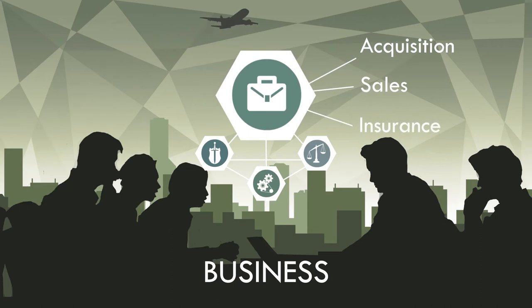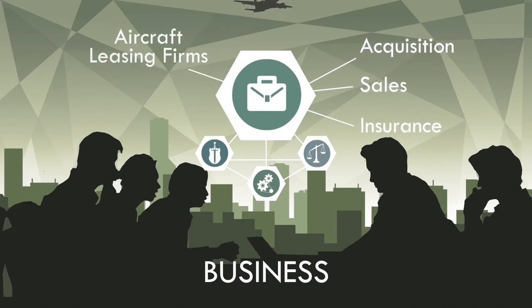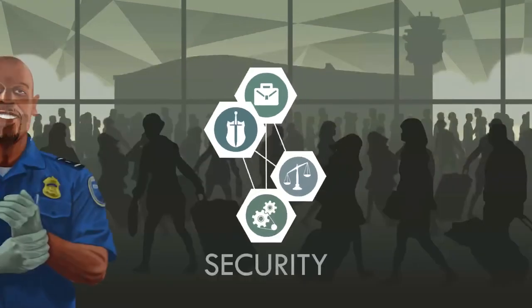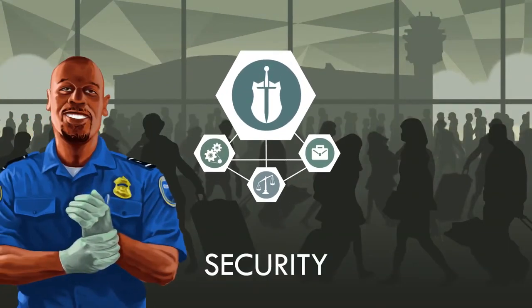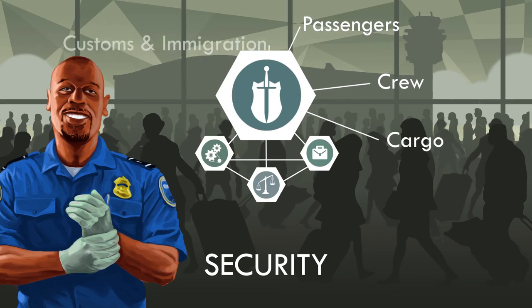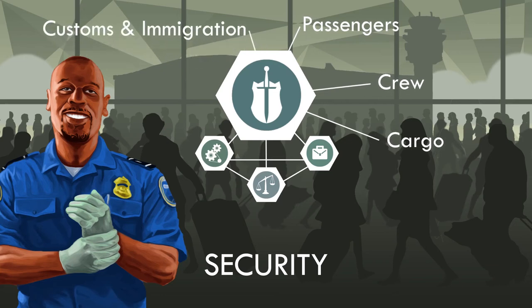The business aspect of aviation involves aircraft acquisition, sales, and insurance, as well as aircraft leasing firms and brokers. Finally, security refers to the security processes for passengers, crew, and cargo, and involves customs and immigration.